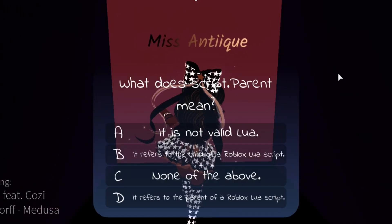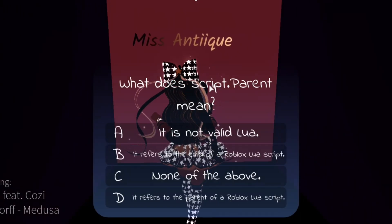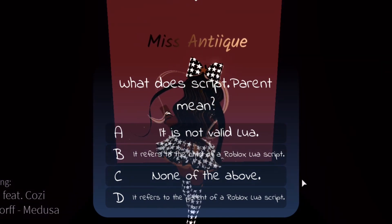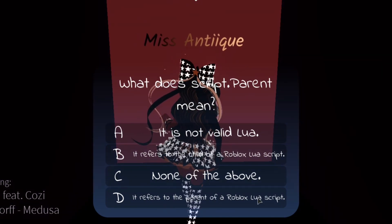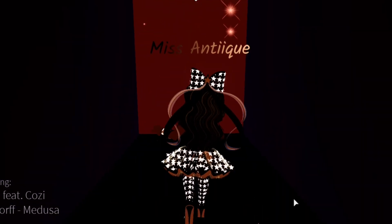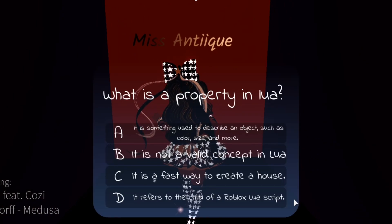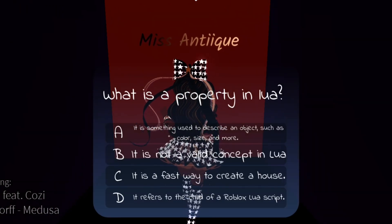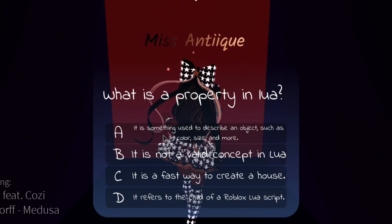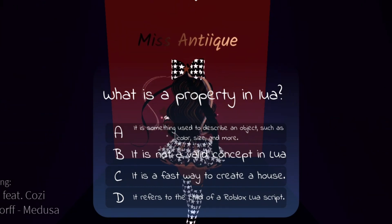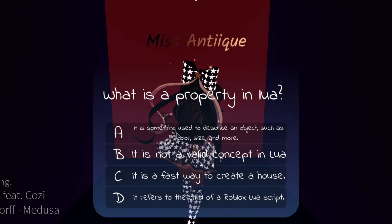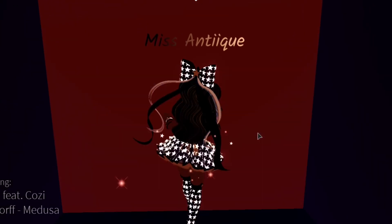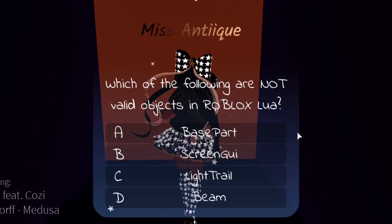It says: what does script.Parent mean? It refers to the parent of a Lua script, so we can just click that. And it says: what is a property in Lua? The answer is something used to describe an object, such as color, size, and more. Click that because that is the right answer.